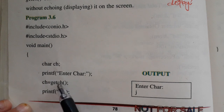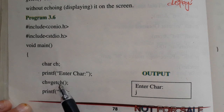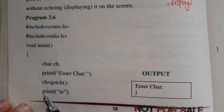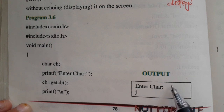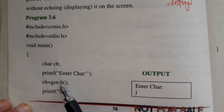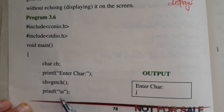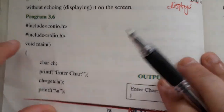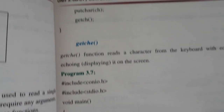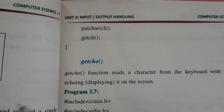ch is equal to getch - تو getch function کیا کرے گا؟ کی بورڈ سے ایک character input کر لے گا اور اس کو ch میں store کرے گا، جو کہ variable ہے of type character۔ Character ہم نے enter کر لیا لیکن وہ یہاں پہ نظر نہیں آ رہا - getch نے accept کیا اور ch میں store کیا، RAM میں موجود ہے لیکن نظر نہیں آ رہا۔ اس کو display کرنے کے لیے printf function استعمال کریں گے۔